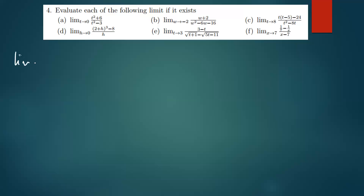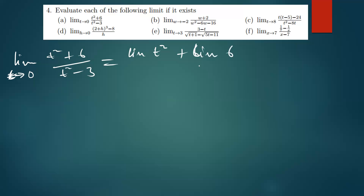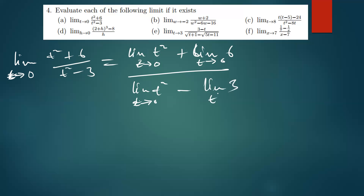The first question is the limit of t squared plus six over t squared minus three, as t is approaching zero. What we can do is distribute the limit to all the terms in this function. We say the limit of t squared plus the limit of six as t is approaching zero.